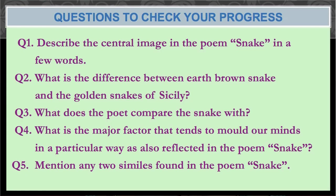This brings us to the questions to check your progress. Question 1: Describe the central image in the poem Snake in a few words. Question 2: What is the difference between the earth-brown snake and the golden snakes of Sicily? Question 3: What does the poet compare the snake with? Question 4: What is the major factor that tends to mould our minds in a particular way, as reflected in the poem Snake? Question 5: Mention any two similes found in the poem Snake.